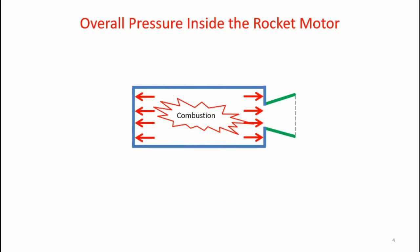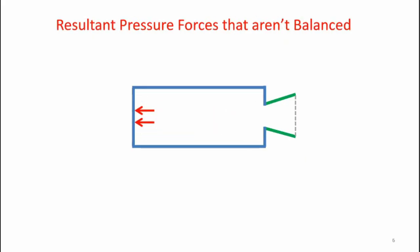And also, if you look at the right-hand side of the motor, there's a hole at the back end. Now there's no surface for the pressure to act on, so there's no pressure force acting in the area of the throat of the nozzle. So if we eliminate balanced forces again, we see that we have a leftward force created by the pressure inside the casing.